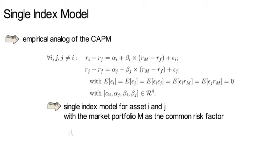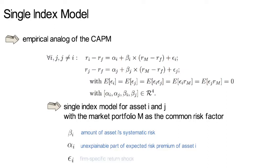Beta i is the amount of asset i's systematic risk. Alpha i is the part of the expected risk premium of asset i that the single index model cannot explain. And epsilon i is the firm specific return shock of asset i. The same holds for asset j.